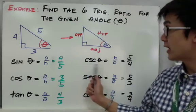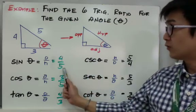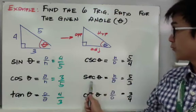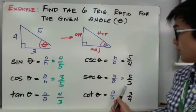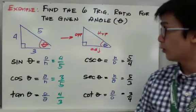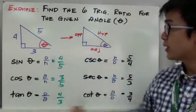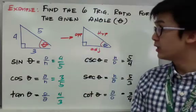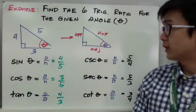For cosecant theta, the reciprocal of 4 over 5 is 5 over 4. For secant theta, we have 5 over 3. And for cotangent theta, we have 3 over 4. And these are the six trig functions of our triangle using our formulas.